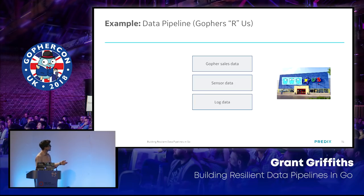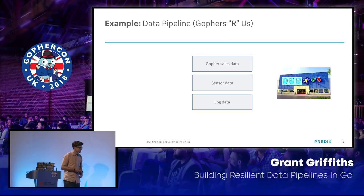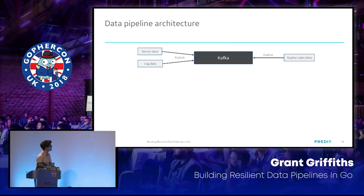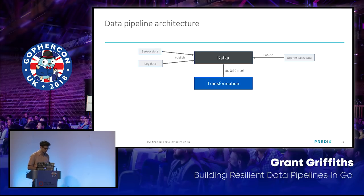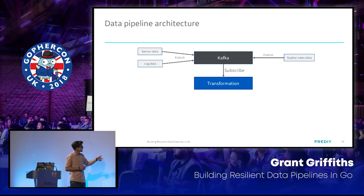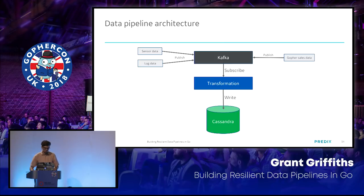For example, you could have all sorts of sensor data, Gophers sales data, and log data — all highly important data that needs to come into the Gophers R Us data pipeline. Let's say we want to focus on sensor data and log data. We send all of that data to Kafka — publishing sales data, sensor data, and log data — and then we parse this data as we please. We're going to have a transformation app that subscribes from that Kafka topic and writes to Cassandra.